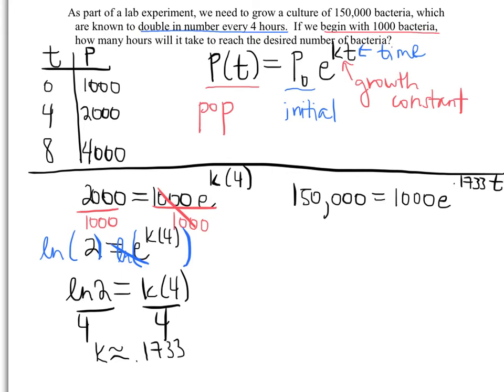Go ahead and divide both sides by 1000. Get lots of good practice with these. Get rid of our coefficient. 150,000 divided by 1000 gives us 150 equals e to the 0.1733 t. Again we need to undo that e function with our natural log function.